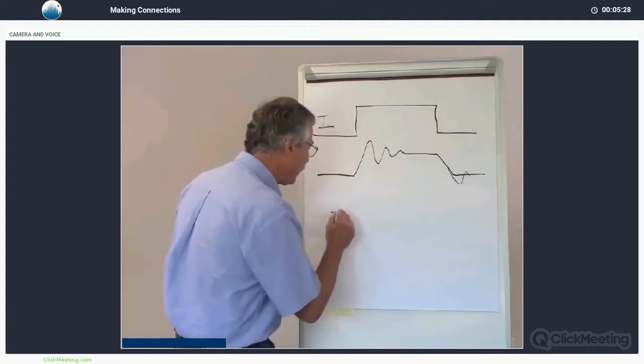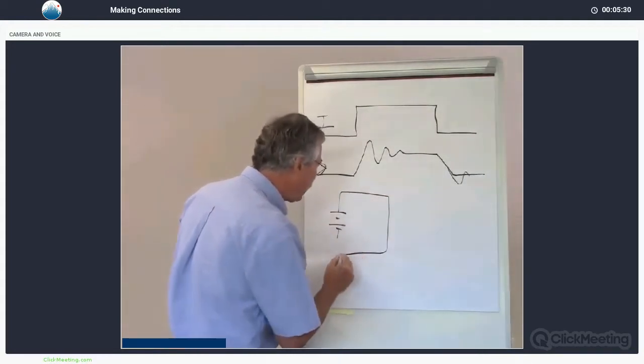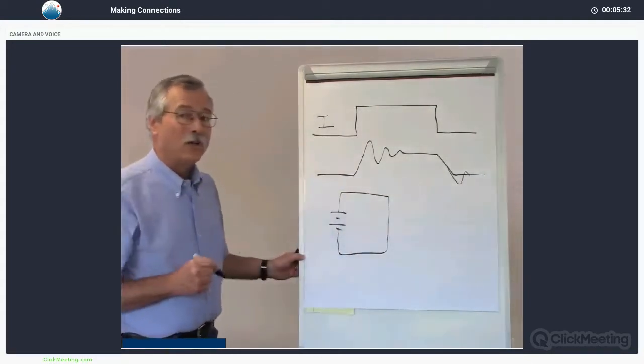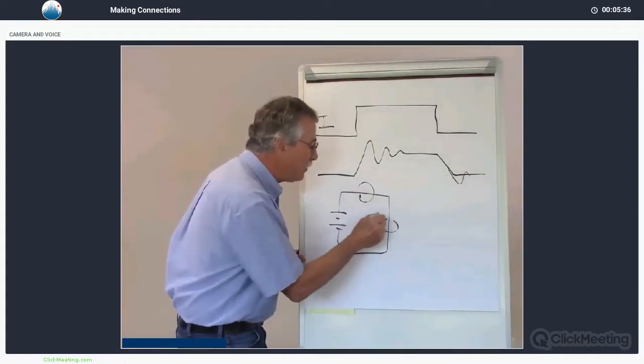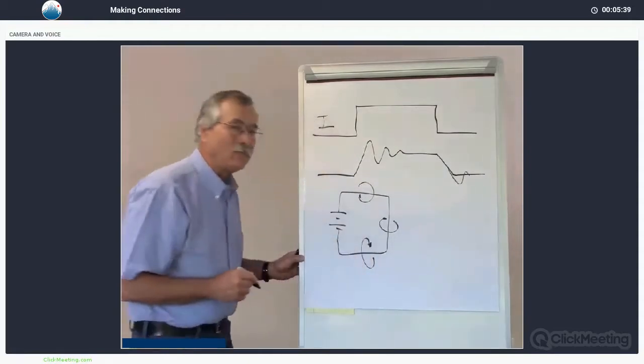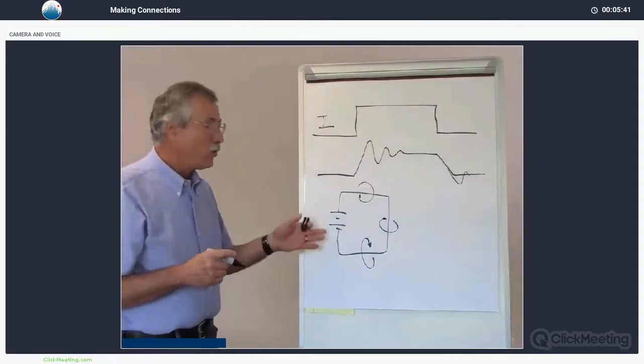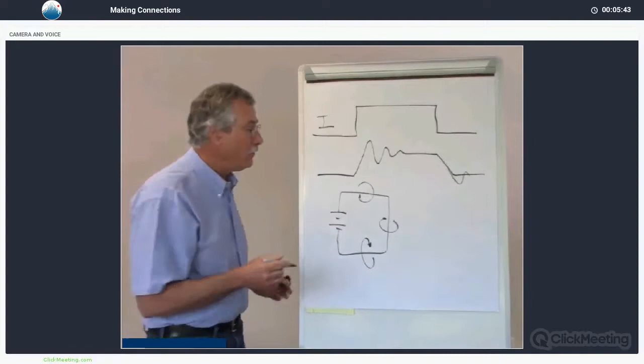This is a symbol for a battery. If I take a battery and connect it to a piece of wire and run a current through that piece of wire, I will get a magnetic field around that wire. We are converting current into a magnetic field.